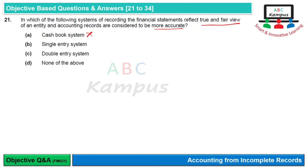Single entry system is basically incomplete record, और incomplete record तो in itself incomplete है, तो वो more accurate कैसे हो सकता है। Double entry system is the correct answer क्योंकि इसमें हर transaction के दो aspects record होते हैं, और ultimately हम उसकी arithmetical accuracy को ensure कर सकते हैं period end पर। तो C option is correct।